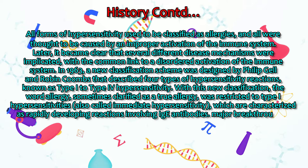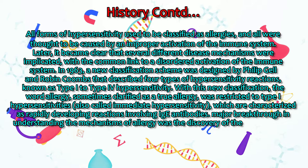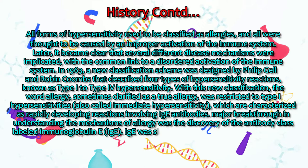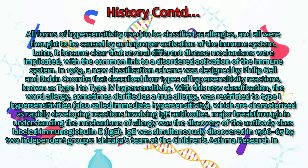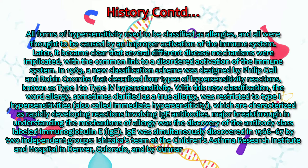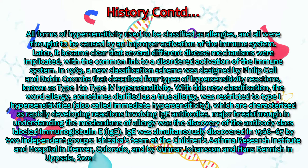A major breakthrough in understanding the mechanisms of allergy was the discovery of the antibody class labeled immunoglobulin E (IgE). IgE was simultaneously discovered in 1966–67 by two independent groups: Ishizaka's team at the Children's Asthma Research Institute and Hospital in Denver, Colorado, and by Gunnar Johansson and Hans Benich in Uppsala, Sweden. Their joint paper was published in April 1969.